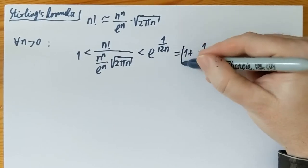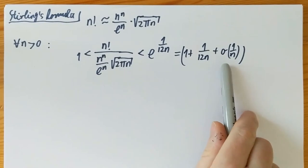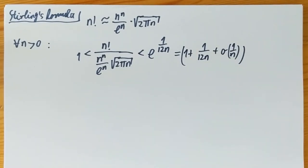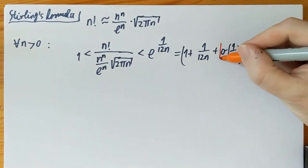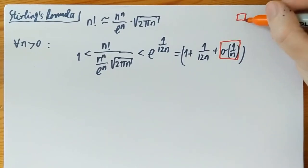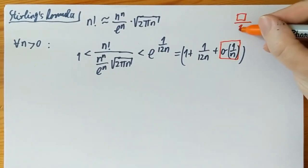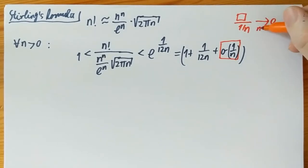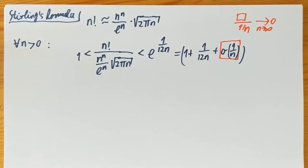The little-o notation means: this is something such that if I divide it by 1 over n, it still goes to 0 as n goes to infinity — so it's smaller than 1 over n, for example 1 over n squared. So that's Stirling's formula, and in this video what I want to do is motivate why this formula should hold. I'm not going to prove it yet, but I want to motivate it.